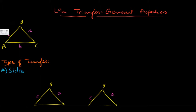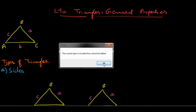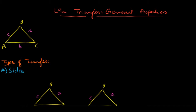A triangle, as you all are familiar with, is a three-sided polygon which has three sides and three angles. The angles are labeled as angle A, angle B, and angle C at each vertex. The sides are represented by the small letters a, b, and c.